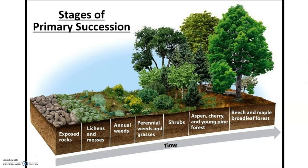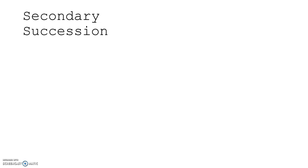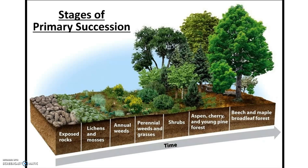Looking at the stages of primary succession: starting with exposed rock on the left and moving through time, the next stage is lichens and mosses, then small weeds, then perennial weeds and grasses, then small shrubs. Certain trees adapt more easily to less soil and more light — aspen, cherry, and young pine grow quickly. Then we get into hardwood trees like beech, maple, and broadleaf forest trees.